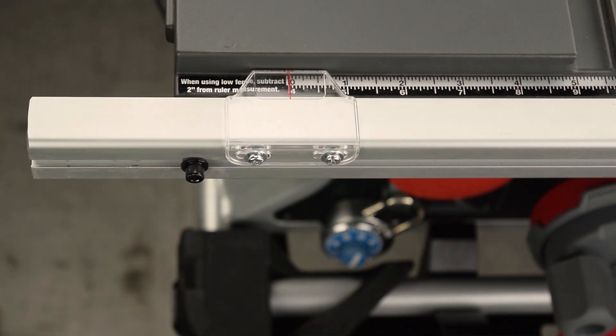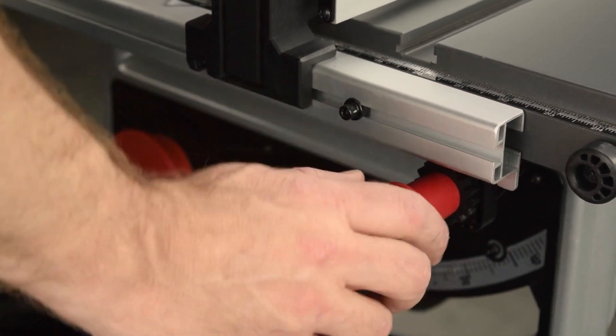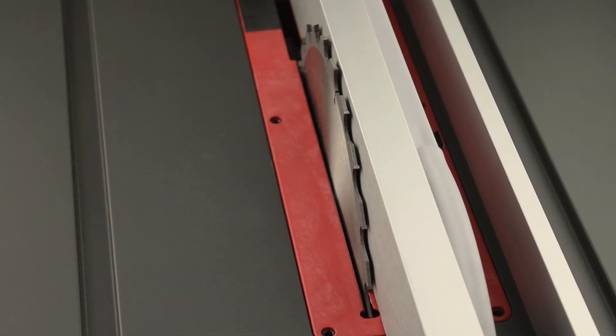Next, double check the calibration. Unlock the rip width control. Shift the rip fence away from the blade, and then back against the blade.